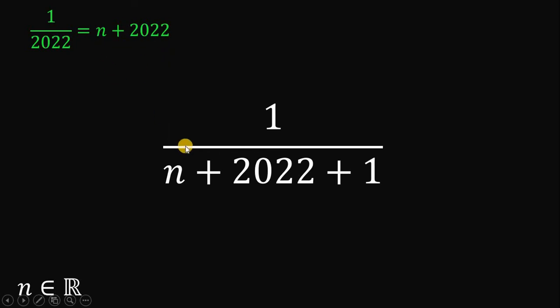Take note that on the denominator of the expression that we want to evaluate, we have also N plus 2022. Therefore, we can replace this expression with 1 over 2022 like this.